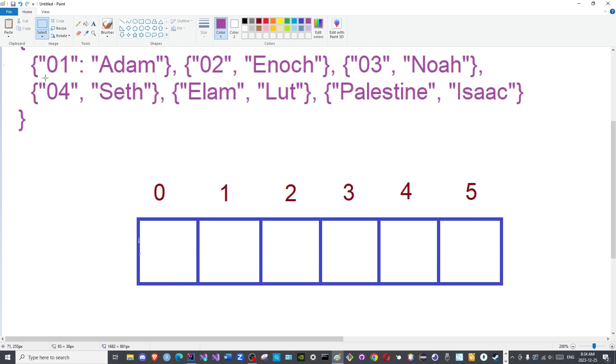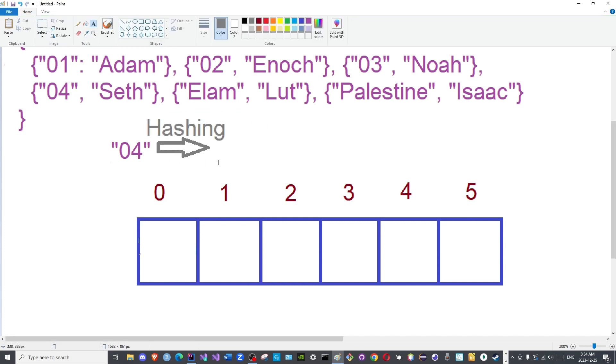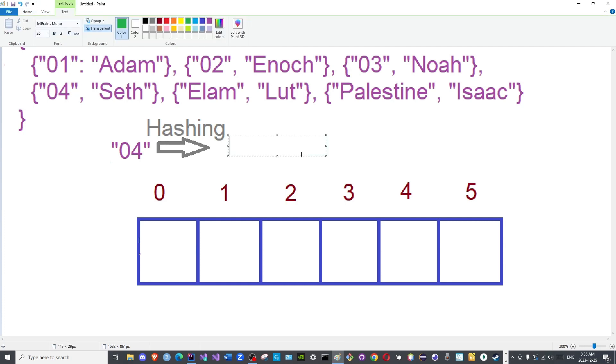The program will take this label here. Then it will convert it into a hash or a hash code through the hashing function. I will just call it hashing. That is the name of the process anyways. Through hashing, it will yield a number.